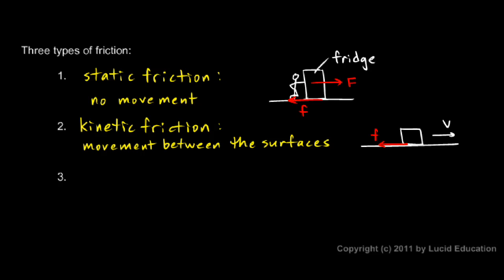So in other words, it's usually harder to get something started moving than it is to keep it moving. That's because the static friction is typically larger. When any two surfaces come into contact, the static friction between those two surfaces will almost always be larger than the kinetic friction, the friction if the surfaces are actually moving.